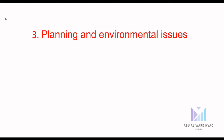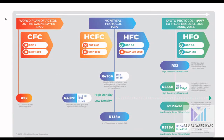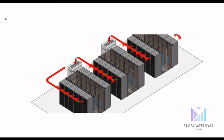Number three: identify planning and environmental issues, in particular those that would prohibit the use of certain types of equipment, or require costly treatment to render the proposed equipment fit for use. For example, the phase-out of HCFCs and some HFCs to reach the new zero ODP and zero — or less than 10 — GWP refrigerants.